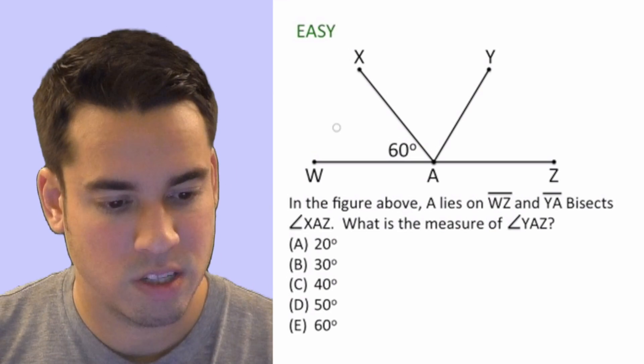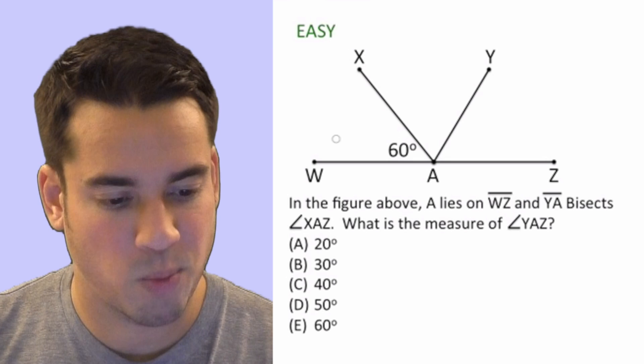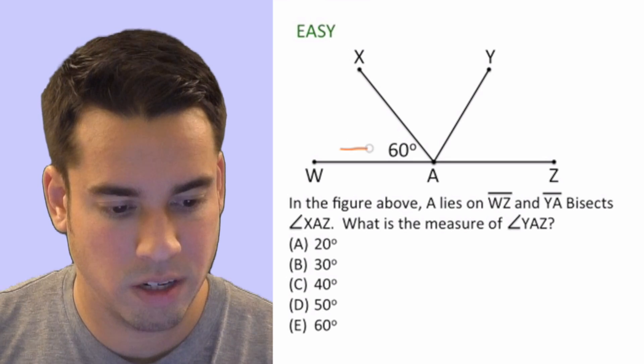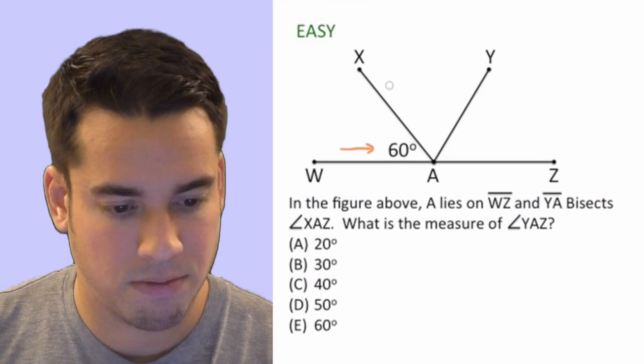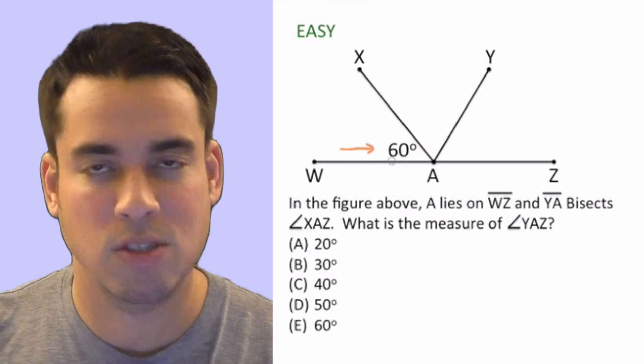Hey guys, welcome to the angles practice problems, level easy. All right, let's do it. So we take a look here on the diagram - we have 60 degrees and we've got five points and all these line segments.